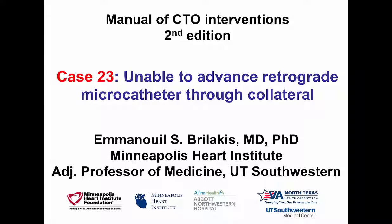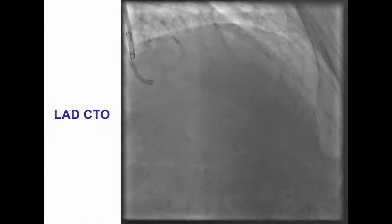Hi, this is Manos Brilakis from the Minneapolis Heart Institute presenting Case 23 for the second edition of the Manual of CTO Interventions. This is a case of retrograde crossing in which the retrograde microcatheter failed to follow the retrograde guide wire after crossing of the collateral.